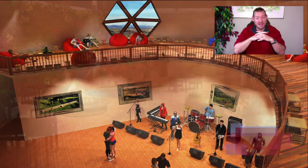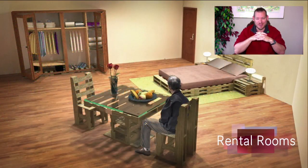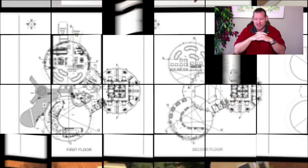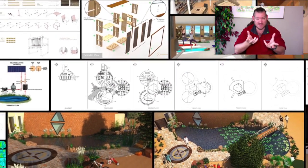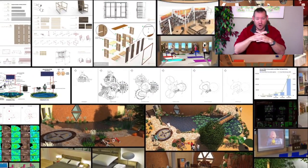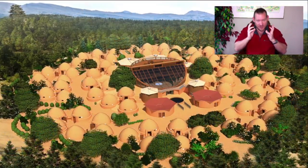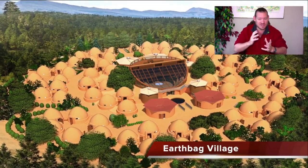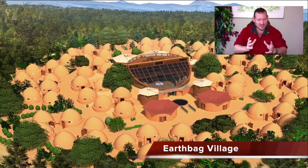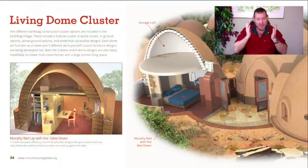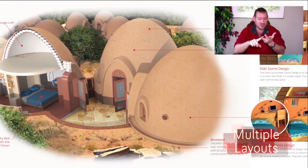One Community's mission is to bring together people with a consciousness for the highest good of all life on this planet and to build self-replicating sustainable teacher demonstration hubs as a pathway to global sustainability. Open source community ecology is really what we're creating. Ecology is a relationship of organisms to each other and to their physical surroundings, and in the background you can see the duplicable city center as well as seven different sustainable village models we are designing as self-replicating teacher demonstration hubs.